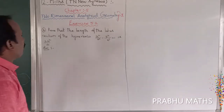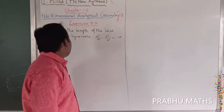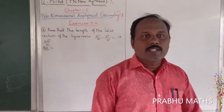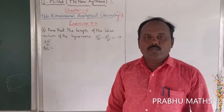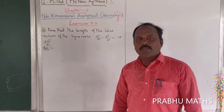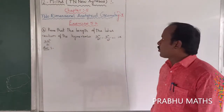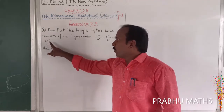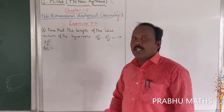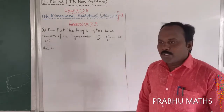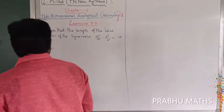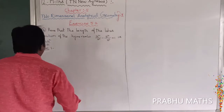6th sum: prove that the length of the latus rectum of the hyperbola x²/a² - y²/b² equals 2b²/a. So first of all, the given equation of the hyperbola.